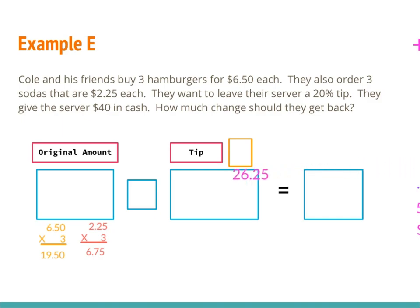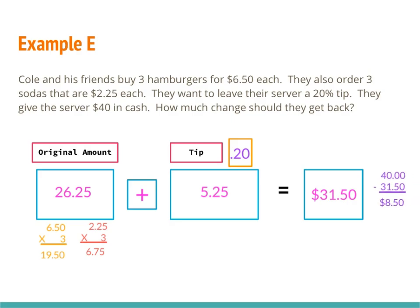Since it's a tip, I'm adding to the bill. The 20% tip as a decimal is 0.20. I multiply 0.20 times $26.25 and get $5.25. Adding that to the bill: $26.25 plus $5.25 gives a total bill of $31.50. But the problem asks how much change they get back from $40, so I take $40 minus $31.50, which gives me $8.50 in change.